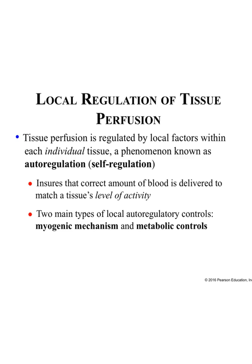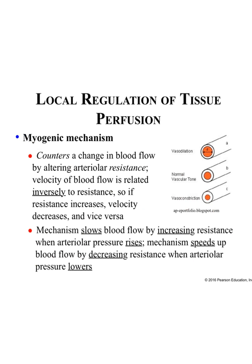In addition to sympathetic and parasympathetic controls that regulate blood flow, tissue perfusion — the amount of blood flow through a capillary bed to a given tissue — is actually regulated by factors within each individual tissue. We call this autoregulation. It enables tissues to highly specialize exactly how much blood, oxygen, and nutrients they need at the exact level of activity for that organ. This is local — within each individual tissue.